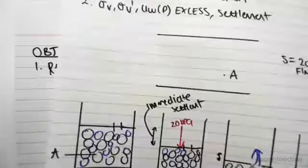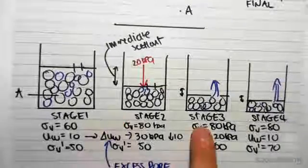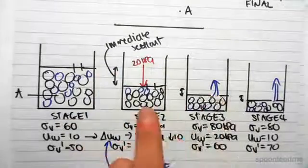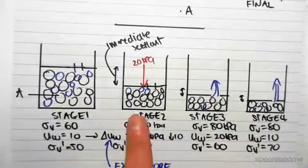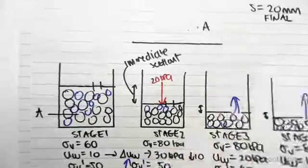So in the previous video we saw how over time we get settlement, a change in pore water pressure, the total stress remains the same and we get a change in the effective stress. So we're going to plot all that now to get a better understanding of what's going on.